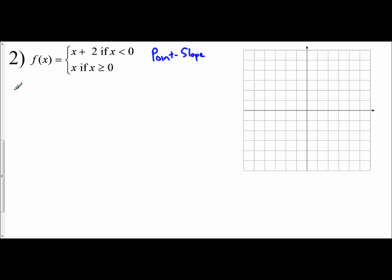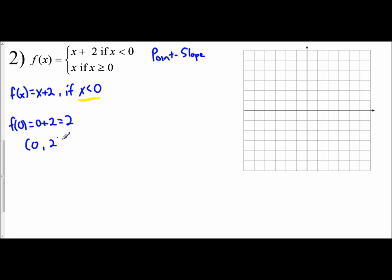Let's try another example, again using the point-slope approach. We'll identify our starting point based off of the conditional values of x and then use our slope in that direction. The first function is f(x) equals x plus 2 if x is less than 0. My starting point is at the x value of 0, so f(0) equals 0 plus 2, which gives me 2. My starting point is 0, 2, and since the boundary is less than, this is going to be an open circle at 0, 2.